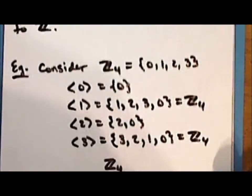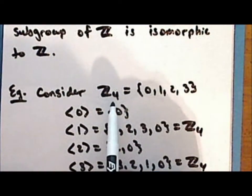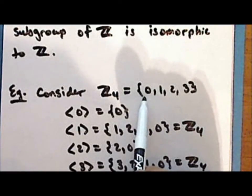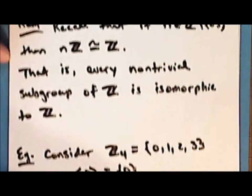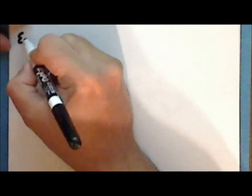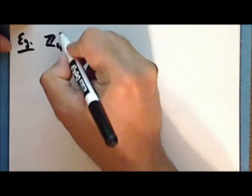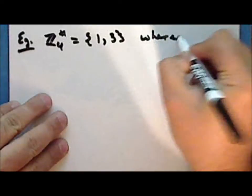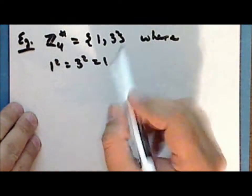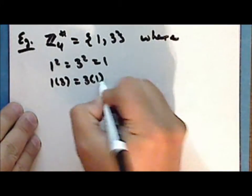We can also consider the deleted set of integers modulo 4 under multiplication modulo 4. To form this group, we must remove the 0 and all zero divisors. In this case, there is one zero divisor, and that is the number 2. So the group of deleted integers modulo 4 under multiplication modulo 4 consists of two elements, the number 1 and the number 3, where 1²=3²=1. That is, each element is its own inverse. 1×3 is the same as 3×1, which is 3.